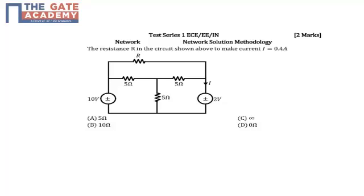In the problem, the circuit is given and we need to find out the value of resistance R which is shown in the circuit. It is also given that the current I is equal to 0.4 ampere.